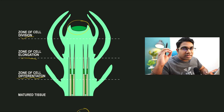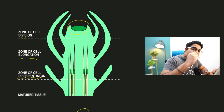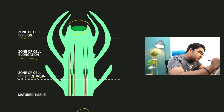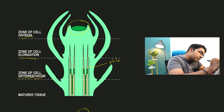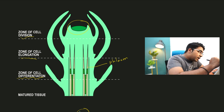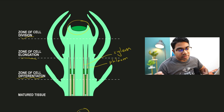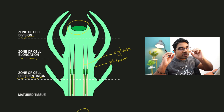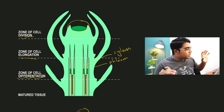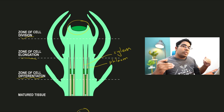The cell is now ready to enter the zone of differentiation, where cells become specialized to perform a specific task. In the zone of cell differentiation you can see special vascular tissue: here we have the phloem, which is responsible for transporting nutrients and the products of photosynthesis, and here we have the xylem, which is responsible for transporting water and minerals.